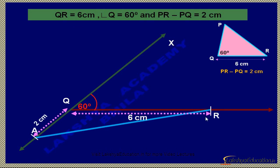Now join A and R and draw a perpendicular bisector of AR. This perpendicular bisector intersects the line QX at point P, which is our required point.